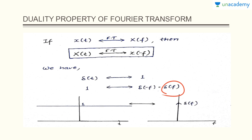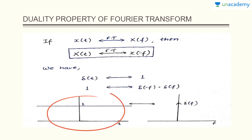So, the Fourier Transform of 1 comes out to be δ(-f), which is nothing but δ(f) because the impulse function is an even function — that is, δ(-f) = δ(f). So, the Fourier Transform of the function which is 1 at all times is a frequency component present only at 0, which is evident because it is a DC signal. The DC component has no frequency other than 0, so we get only an impulse at f = 0.